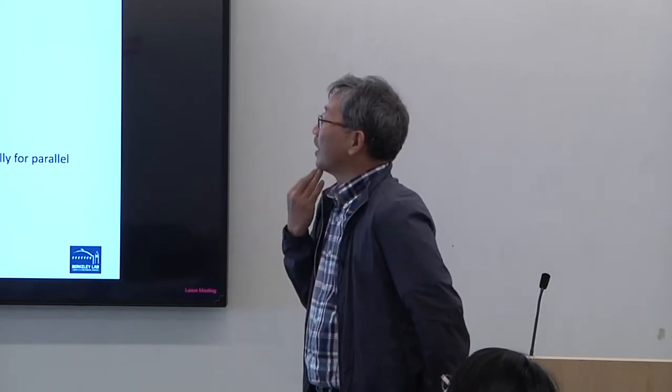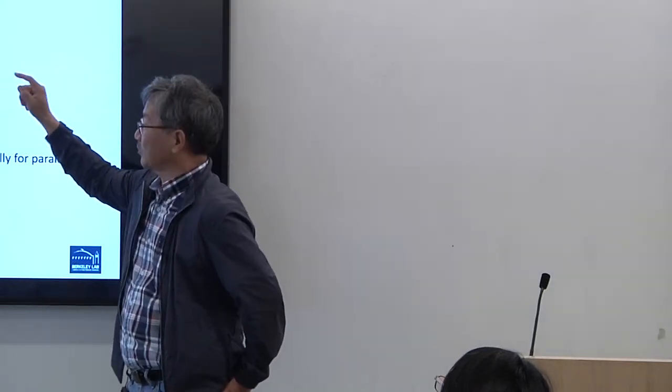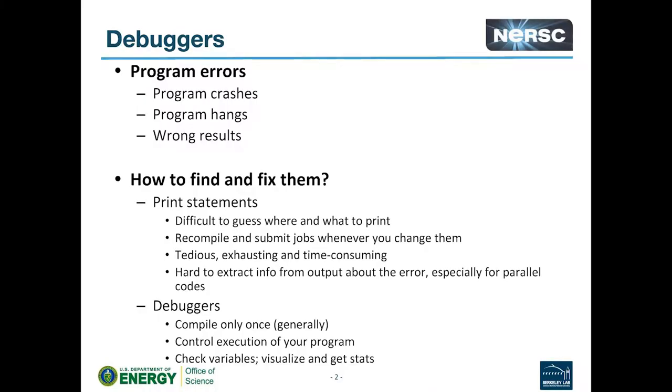So the question is, how do you find these kind of errors and how do you fix them? So the easy way is to put a print statement here and there. Nothing to learn here. But the problem is that it is very difficult to guess where to put these print statements, especially if it is parallel code using lots of MPI tasks. It can be from a different rank, for instance, and also what to print.